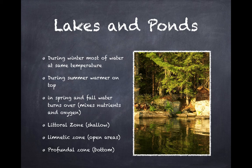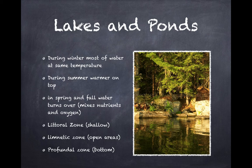Lakes are divided into three different zones. The littoral zone is the shallow area close to shore. The open part of the lake — the middle — is the limnetic zone, but that does not go all the way to the bottom. The actual bottom of the lake is referred to as the profundal zone, and that can differ depending on whether or not the lake is deep enough that sunlight reaches all the way to the bottom.